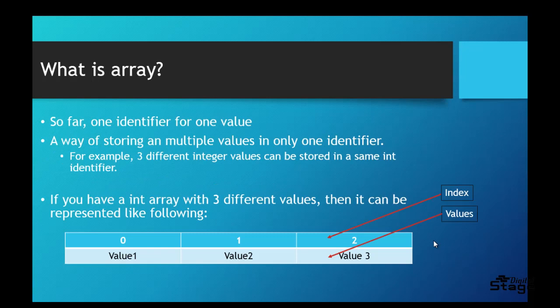What is an array? So far when you are declaring a variable, you have one identifier and you store only one value to that identifier. Whereas an array is a way of storing multiple values in one single identifier. For example, three different integer values can be stored in the same int identifier using an array. This upper row is called the index of the array, and the lower one contains the values stored in the array.